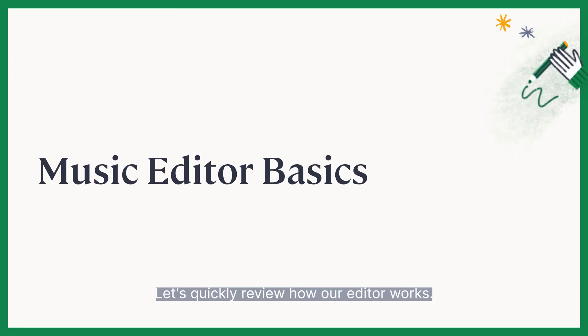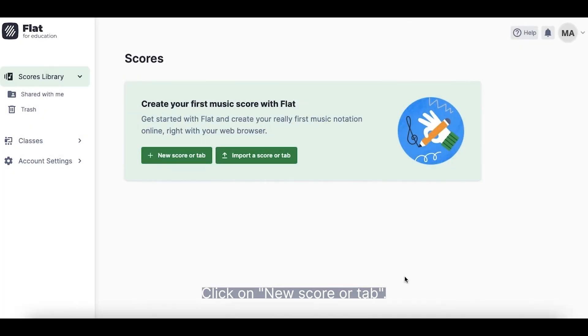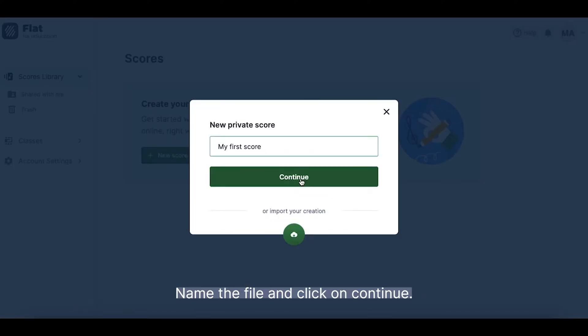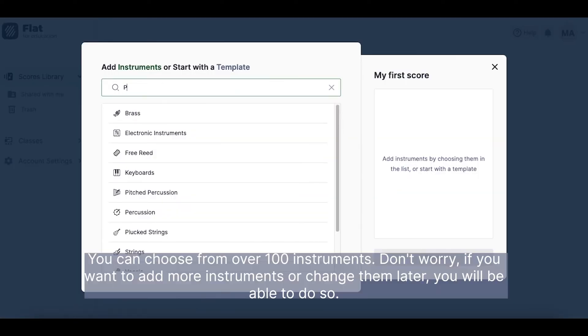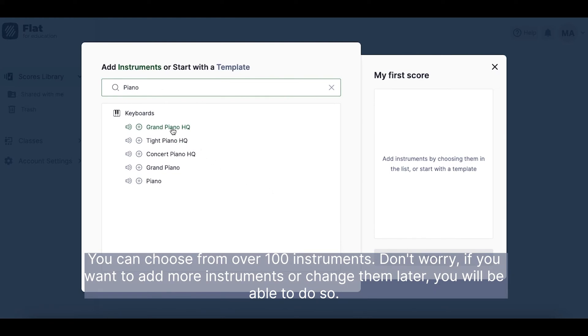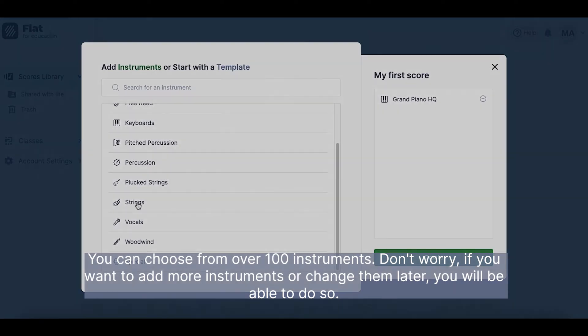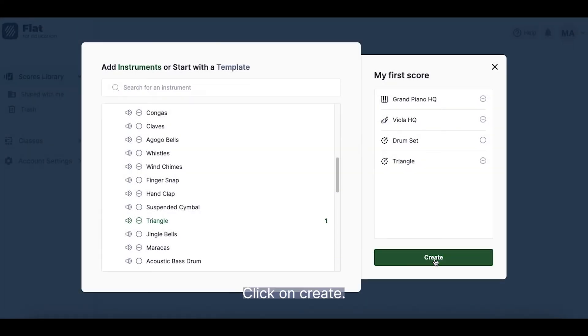Let's quickly review how our editor works. Click on New Score or Tab. Name the file and click on Continue. You can choose from over 100 instruments. Don't worry, if you want to add more instruments or change them later, you'll be able to do so. Click on Create.